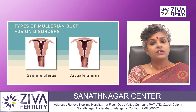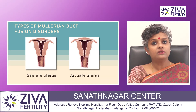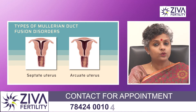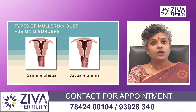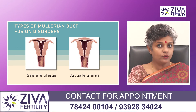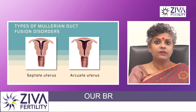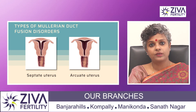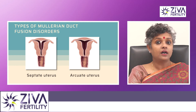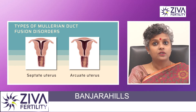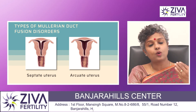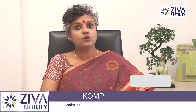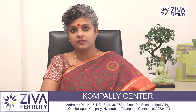A septate uterus is a condition where there is a fibrous band of tissue growing through the uterus. A doctor can remove this fibrous band through a minimally invasive procedure known as hysteroscopy. Then there is the arcuate uterus, which means there is a dent on the top of the uterus. This situation does not cause any problems with pregnancy.